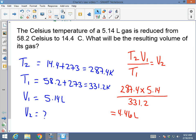That's the response to this question. When the temperature was lowered to 14.4 from 58.2 at a beginning volume of 5.14, my resulting volume would be 4.46 liters. Make sure that you work out this Charles's Law equation in Kelvins instead of degrees Celsius or Fahrenheit.